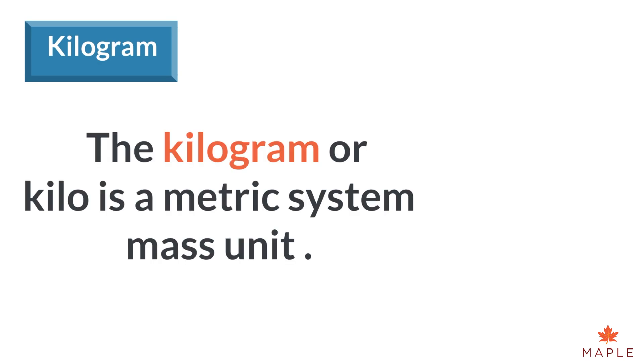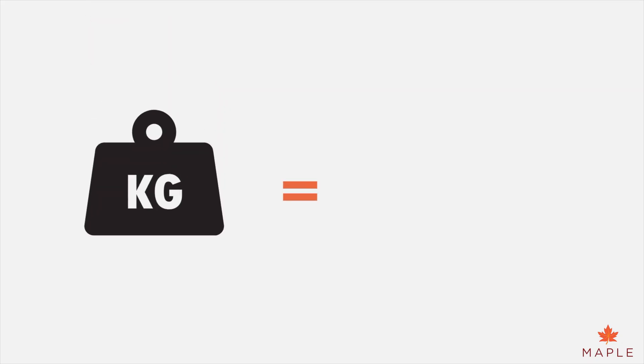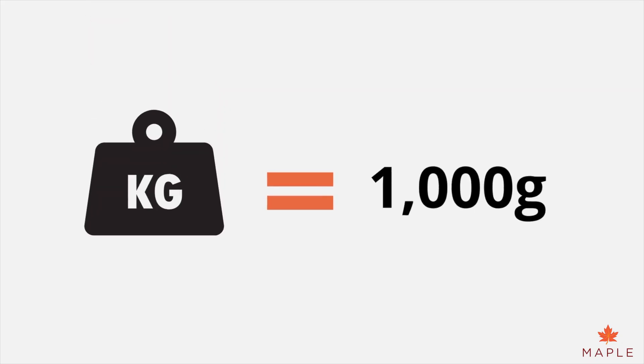The kilogram, or kilo, is a metric system mass unit and the symbol is kg. One kilogram (kg) is equal to one thousand grams (g).